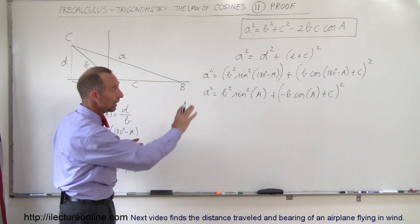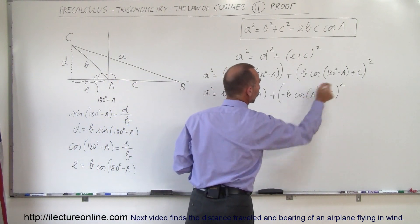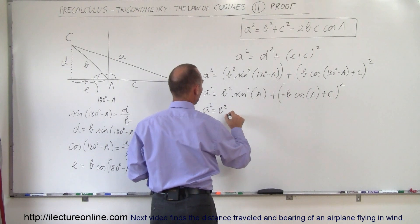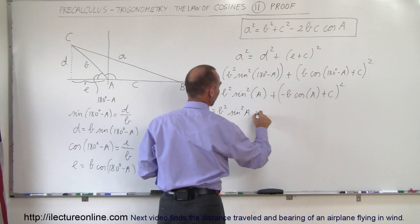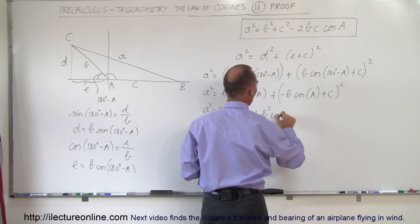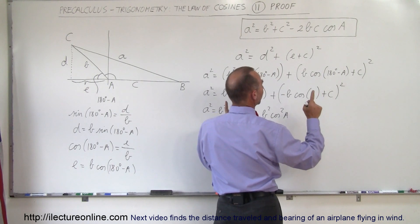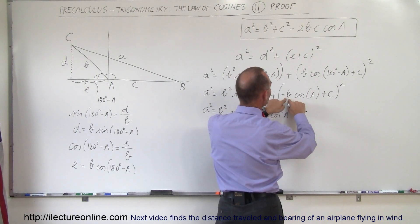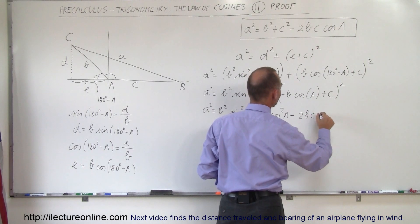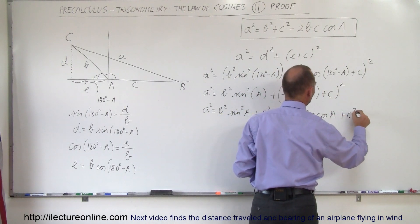Now that the angle is simplified, we can multiply out this binomial — two terms squared. This gives us a squared equals B squared times the sine squared of A, plus B squared times the cosine squared of A, plus twice the product of the two terms — but since we have a negative, it becomes minus 2Bc times the cosine of A — and then plus c squared at the end.